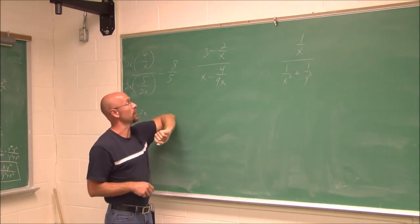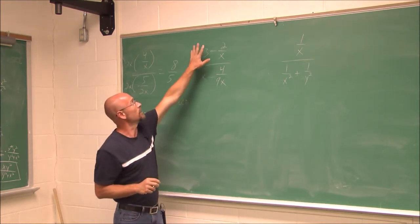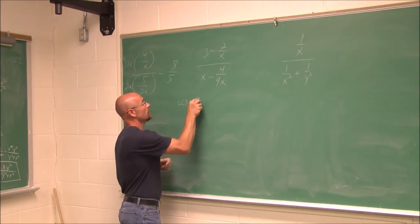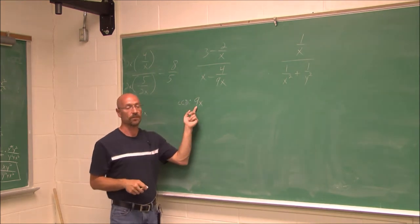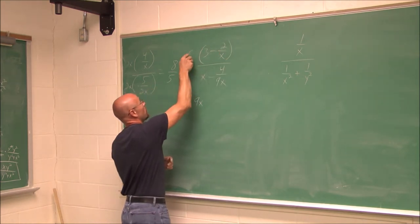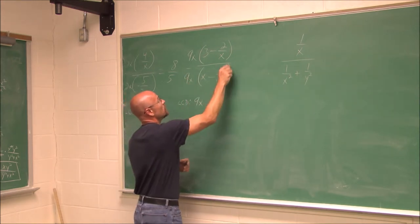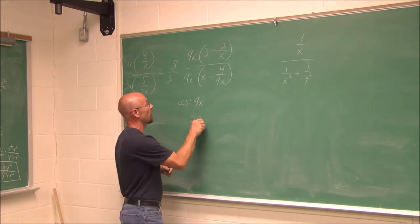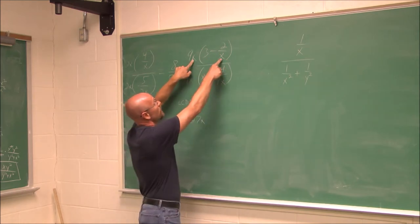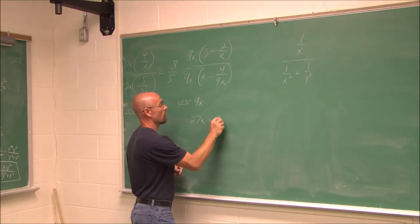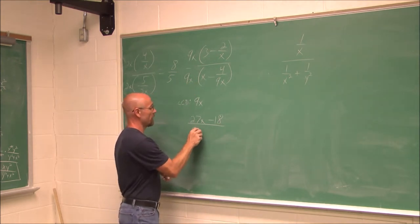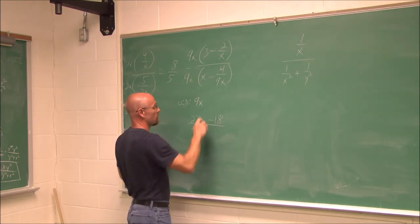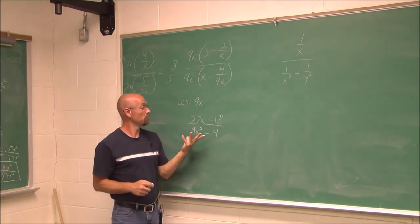Here we do the same thing: determine the LCD of all the fractions involved. In the numerator I have x, and in the denominator I have 9x, so the LCD is 9x. I'm going to multiply the top and the bottom by 9x. Distributing: 9x times 3 is 27x; 9x times (negative 2 over x), the x's cancel, giving 9 times negative 2, which is negative 18. In the denominator: 9 times x is 9x²; 9x times (negative 4 over 9x), the 9x's cancel, leaving negative 4.